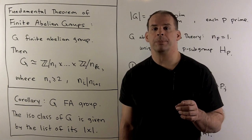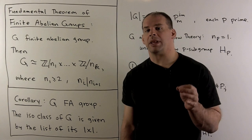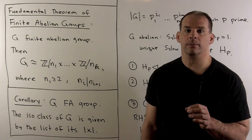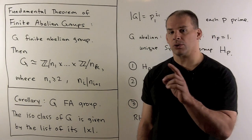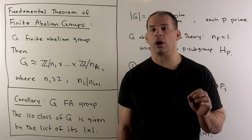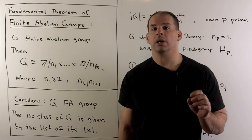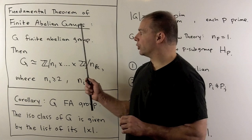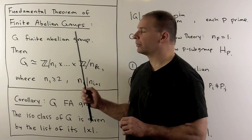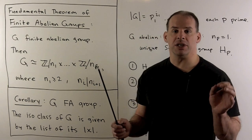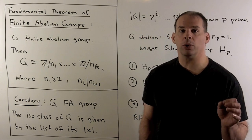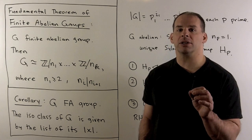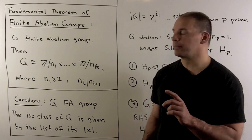Using direct products, we can apply Sylow theory to finite abelian groups. The result is as good as one could hope for. We have the Fundamental Theorem of Finite Abelian Groups, which says that if G is a finite abelian group, then G is isomorphic to a direct product of finite cyclic groups.